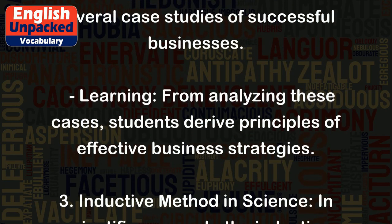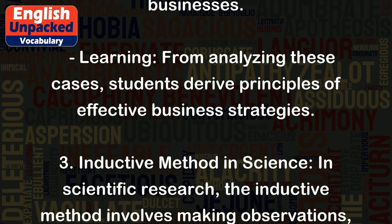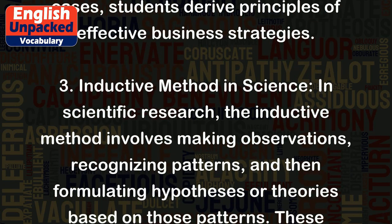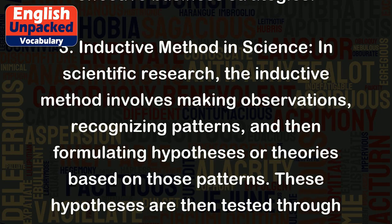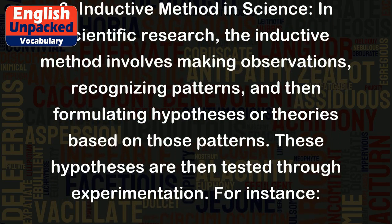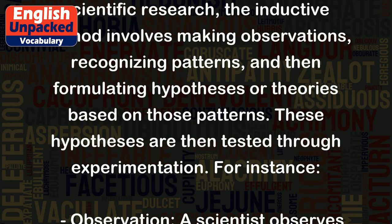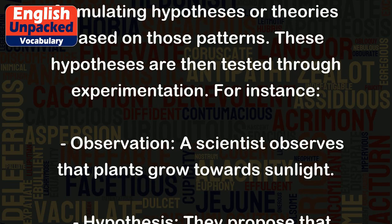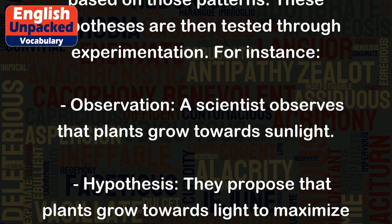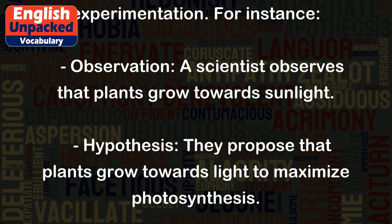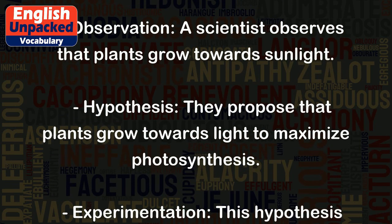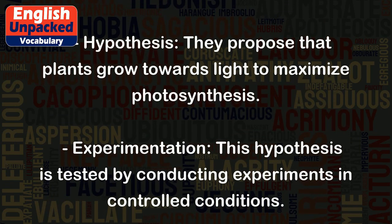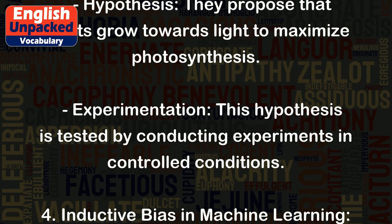3. Inductive method in science: In scientific research, the inductive method involves making observations, recognizing patterns, and then formulating hypotheses or theories based on those patterns. These hypotheses are then tested through experimentation. For instance, observation: a scientist observes that plants grow towards sunlight. Hypothesis: they propose that plants grow towards light to maximize photosynthesis. Experimentation: this hypothesis is tested by conducting experiments in controlled conditions.